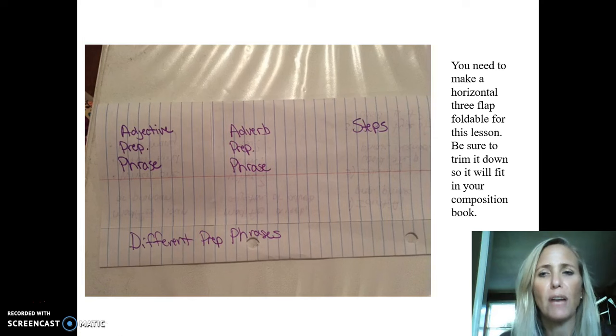You are going to be making a three-flap horizontal foldable with the holes across the bottom. You're going to cut three flaps into it. I strongly suggest that you cut off the red and above, because if you don't, it will not fit in your composition book. So get this ready, pause until it's ready, and then you can hit play and we'll continue on with the lesson.